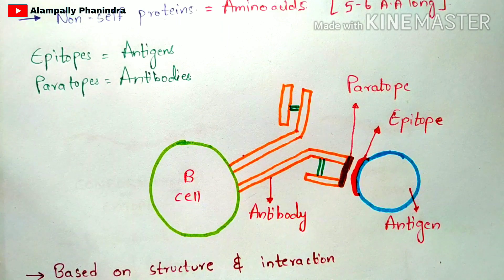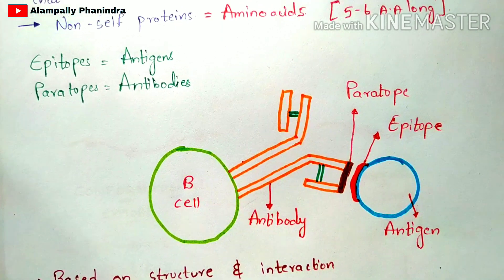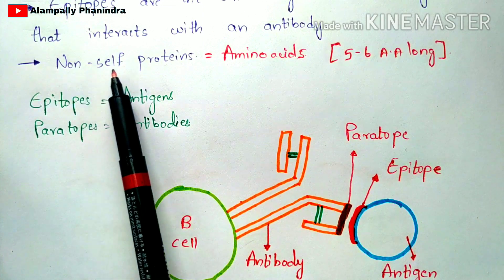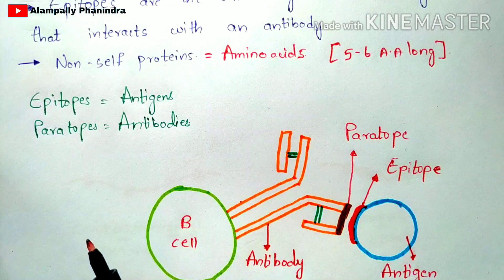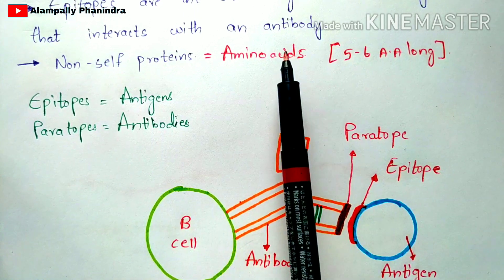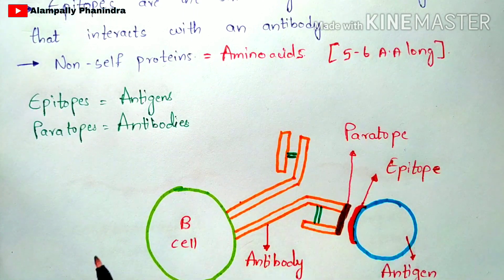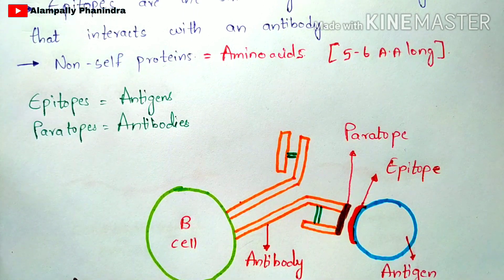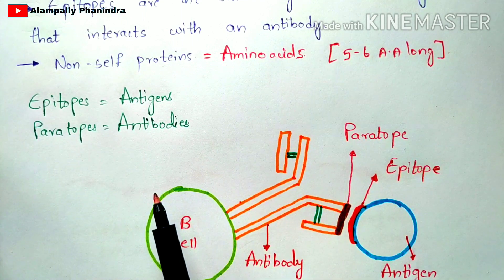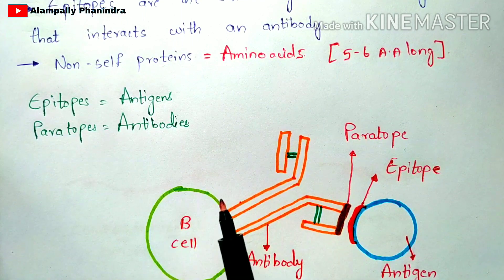Epitopes are non-self proteins which are made up of amino acids. We know that proteins are made up of a sequence of amino acids. Each epitope is made up of a protein consisting of a sequence of five to six amino acids long.